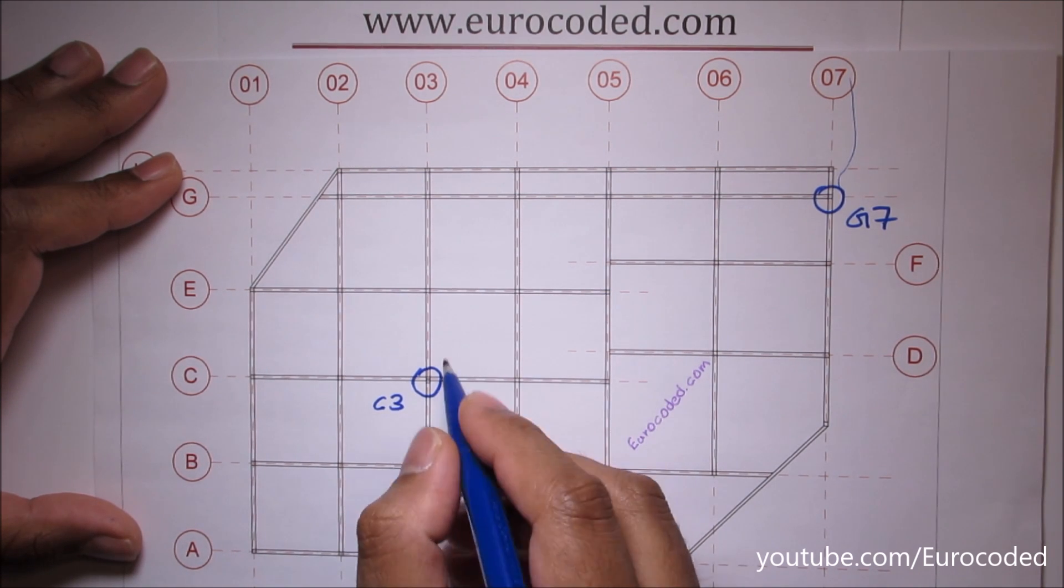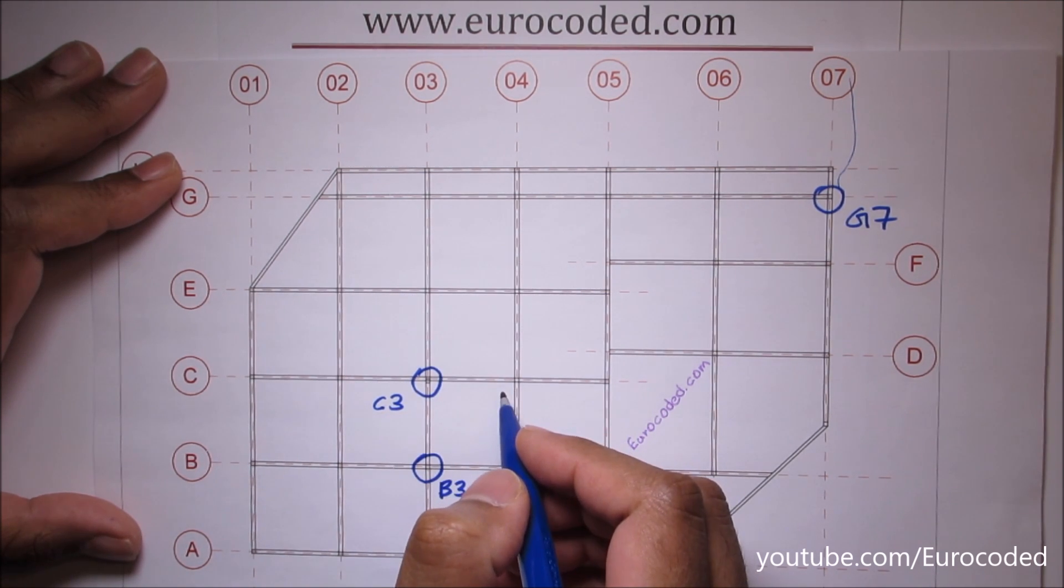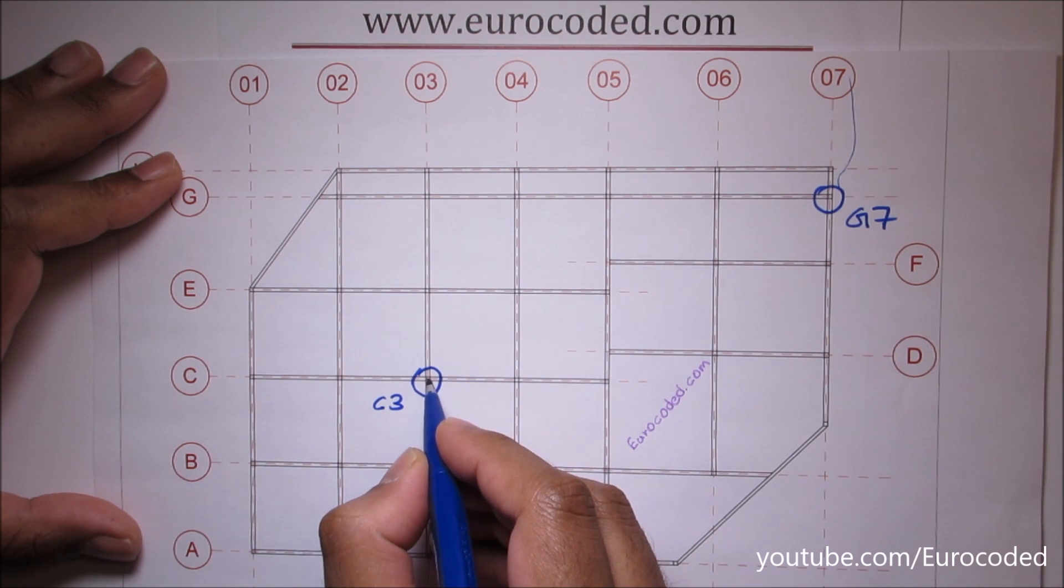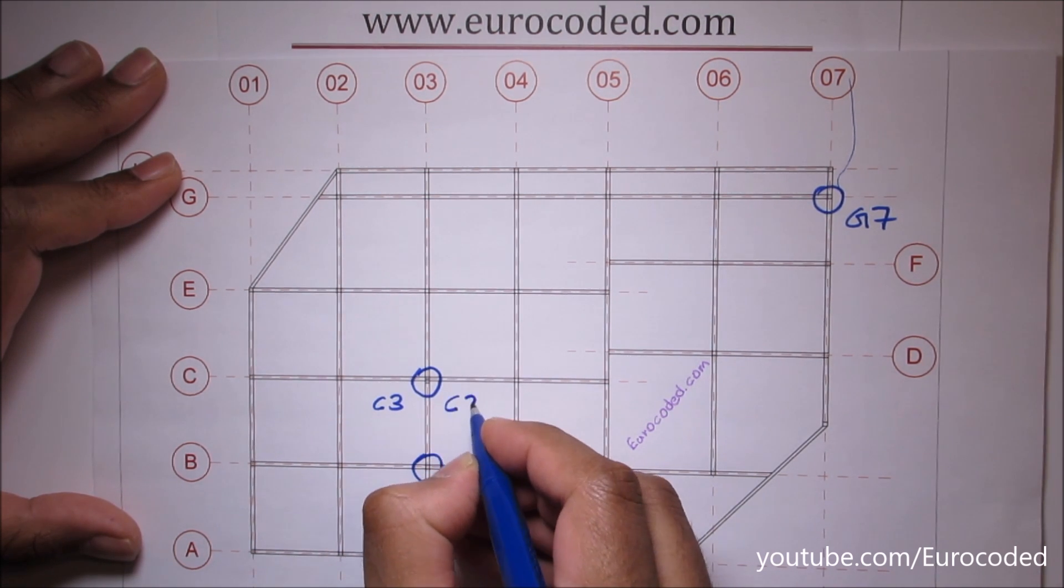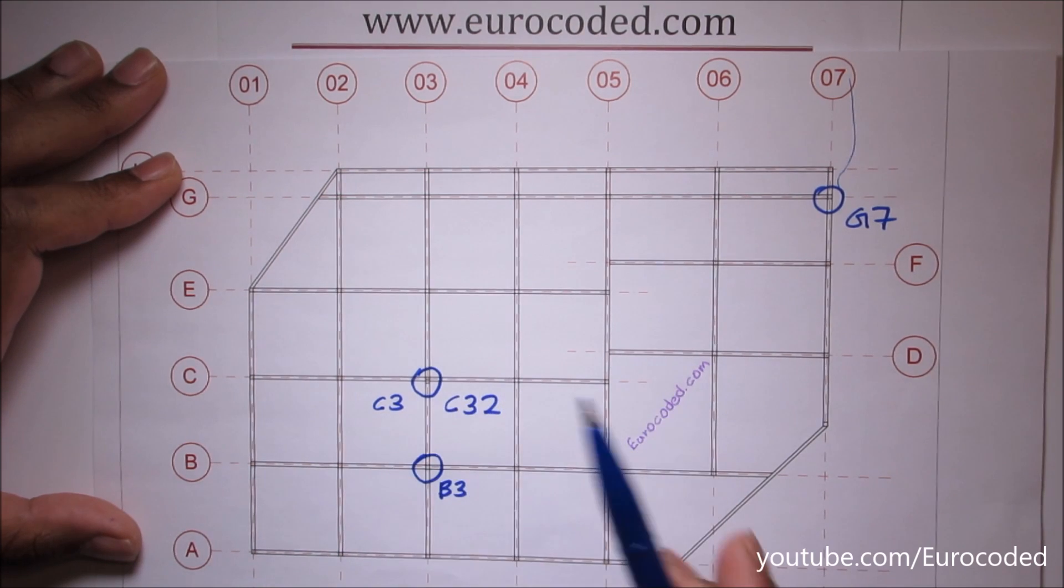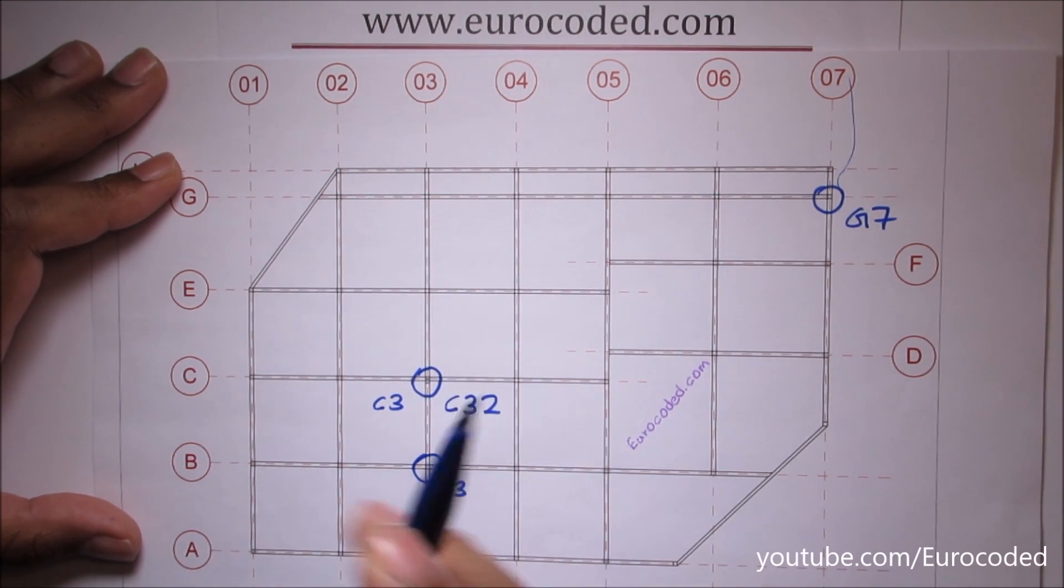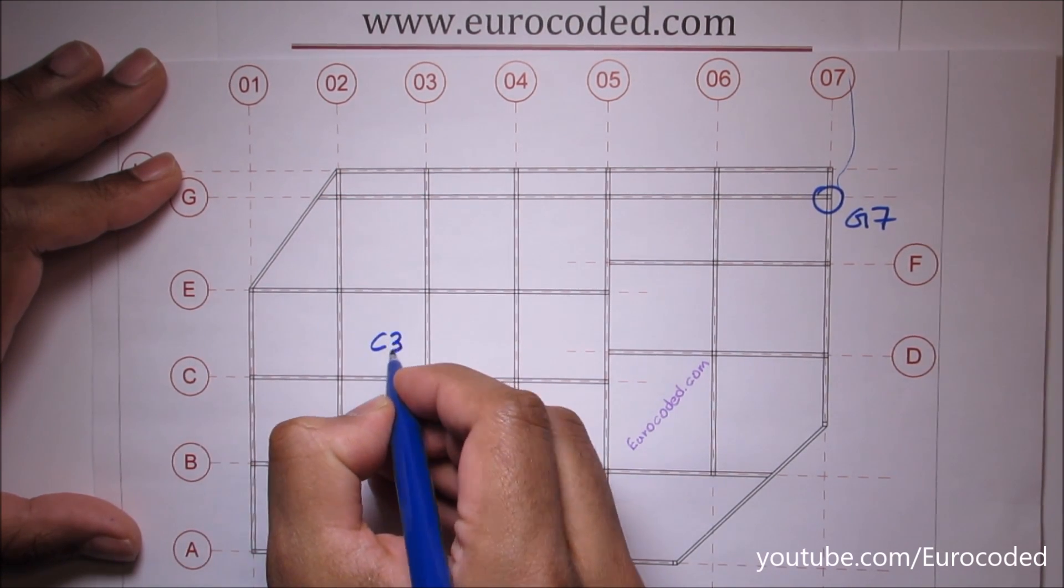So if you take this particular panel, we can then number this beam as C32 and we can number this beam as C31.